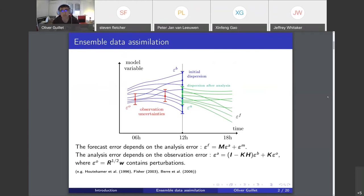Here you can see a figure showing how the observation uncertainties are taken into account to reduce the analysis error. The dispersion after the analysis, after taking the observations into account, is reduced compared to the initial dispersion. This is very standard, and below is the corresponding formula.